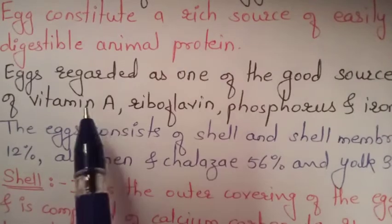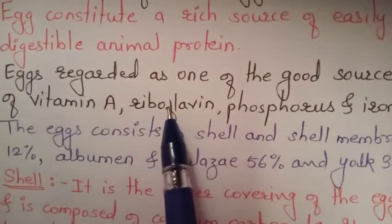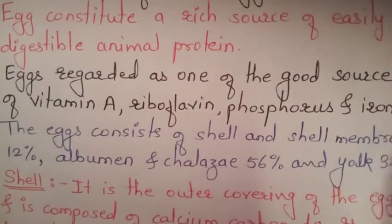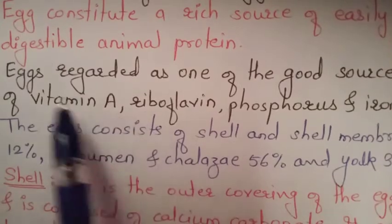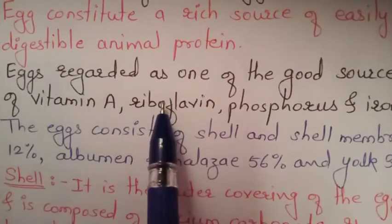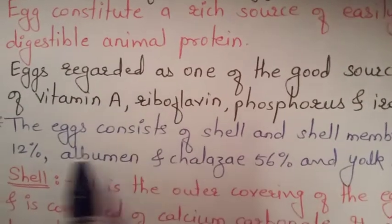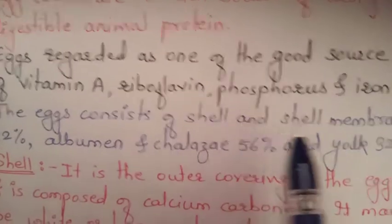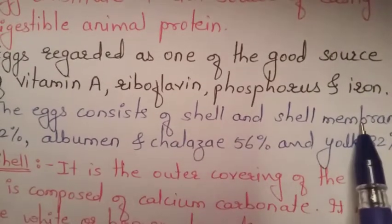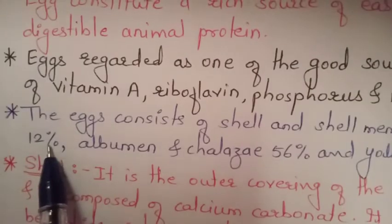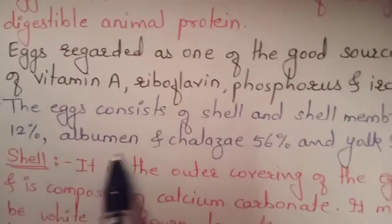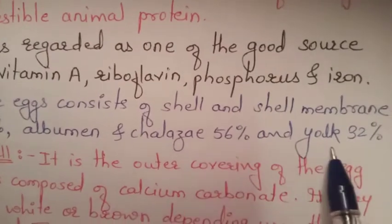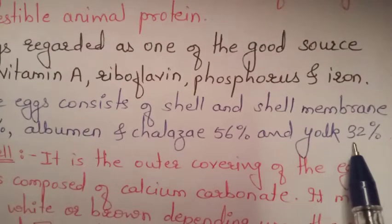All these — proteins, vitamin A, riboflavin, phosphorus, and iron — are all available in eggs. The egg consists of shell and shell membrane 12 percent, albumin and chalaza 56 percent, and yolk 32 percent.